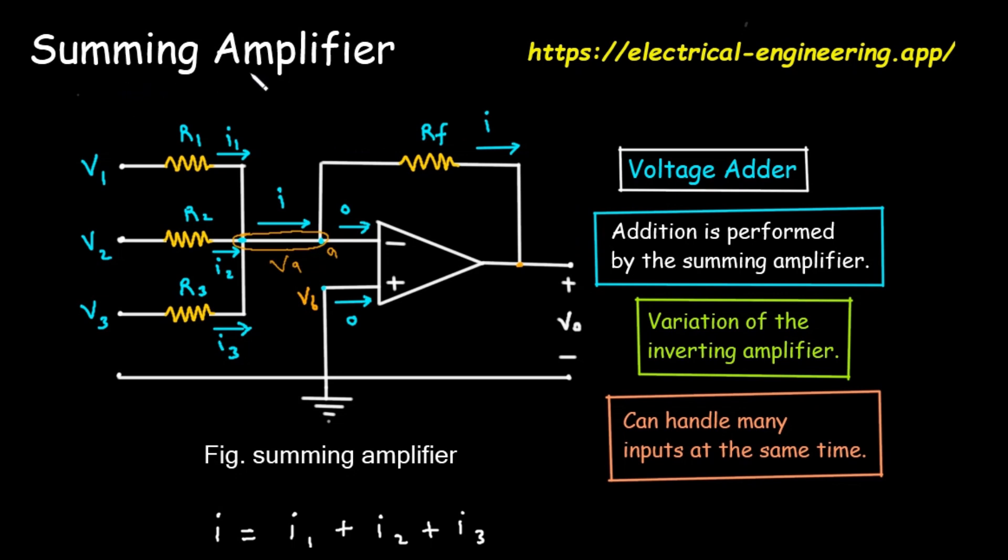This name tells us its main job: to sum, or add, things together. Below the title is the circuit diagram, labeled fig, summing amplifier. Let's break it down piece by piece. The large triangle in the middle is the universal symbol for an operational amplifier, or op-amp for short.